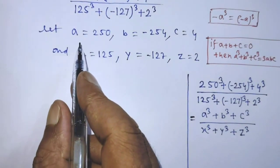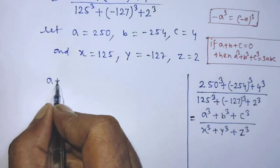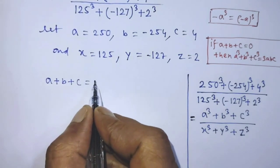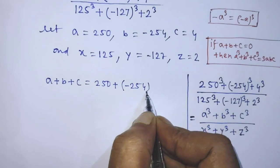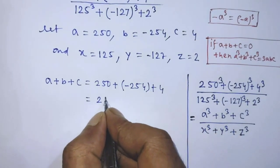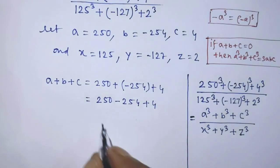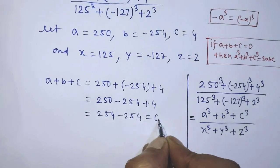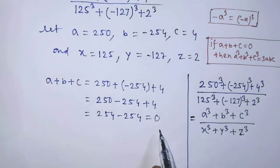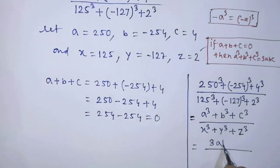Now we have to add A, B, and C. So A plus B plus C is equal to 250 plus minus 254 plus 4, which gives us 250 minus 254 plus 4, that is 254 minus 254, which equals 0. The sum of A, B, and C is 0. So according to this formula, in the place of numerator we get 3 times A times B times C.